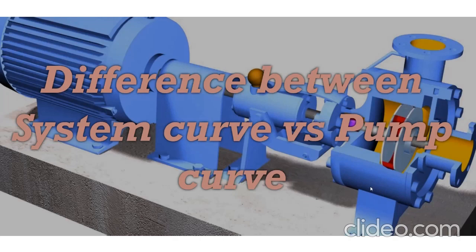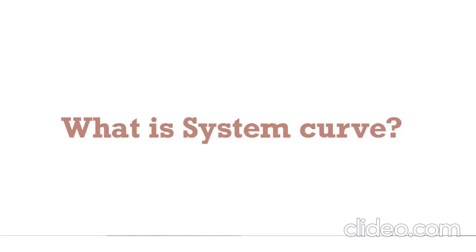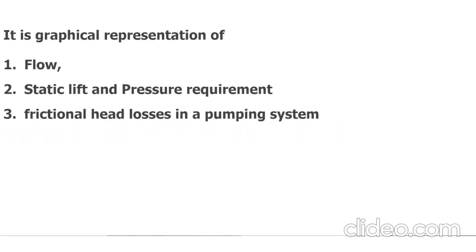What is a system curve? A system curve is basically the graphical presentation of three elements: flow, static lift and pressure requirement, and frictional head losses in a pumping system. It represents flow, static head, and frictional head.